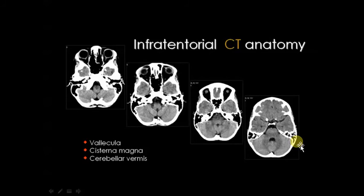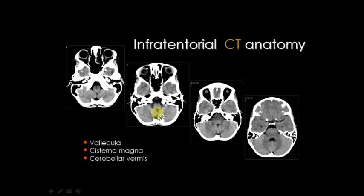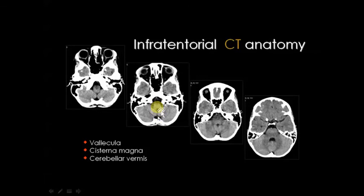Look at these CT images. You can see the large fourth ventricle — in front of it is the pons, and here is the cerebellum. But if you go down in the infratentorial region, the fourth ventricle becomes narrower and narrower. At that level you can no longer see the pons. When the fourth ventricle is narrow, the structure in front of that narrow part is the medulla oblongata — not the pons.